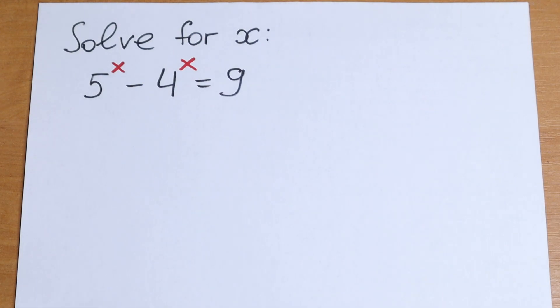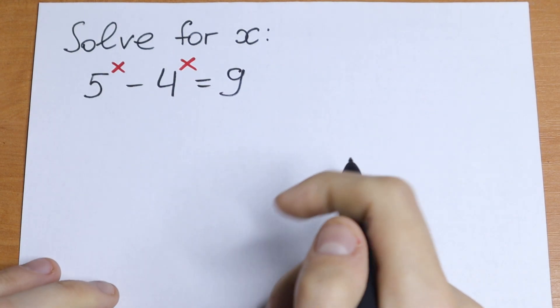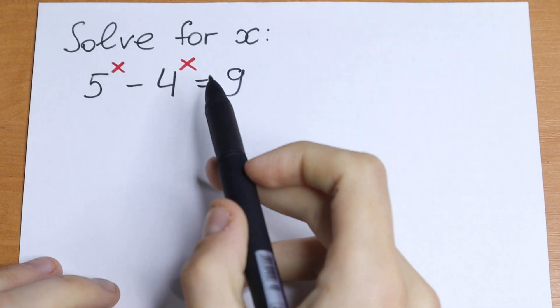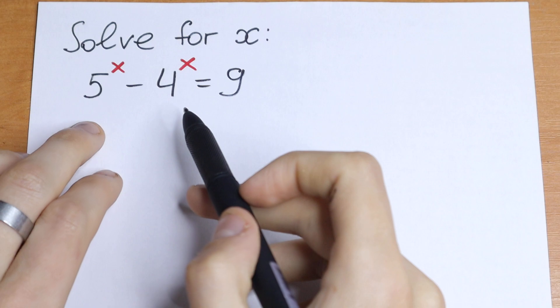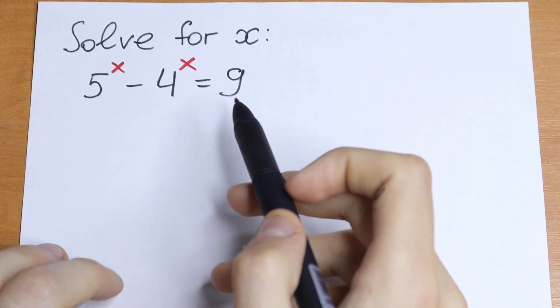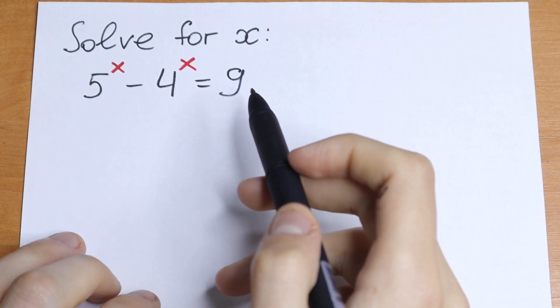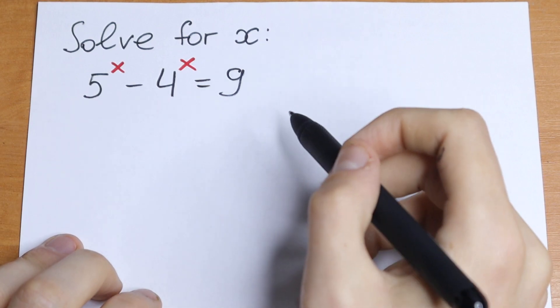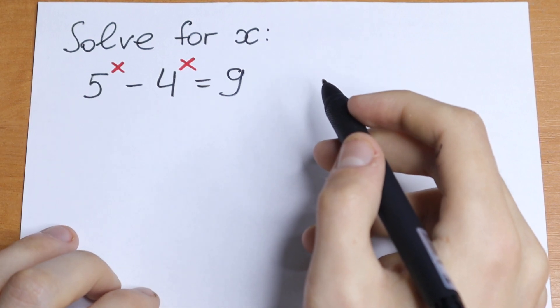Hello everyone, welcome back to Mathmoon. Today we have an interesting exponential equation: 5 to the power x minus 4 to the power x equal to 9.